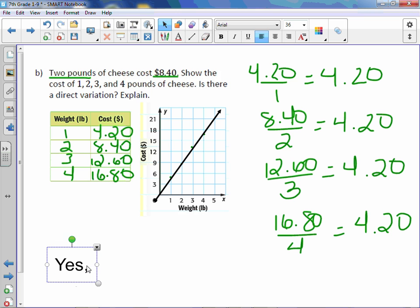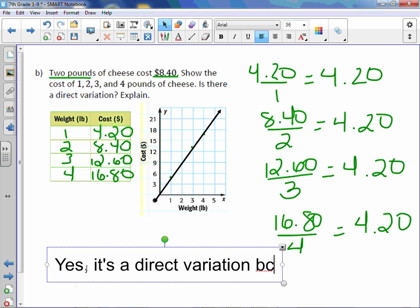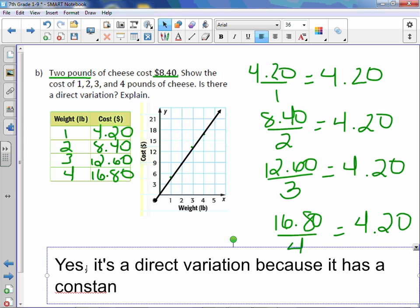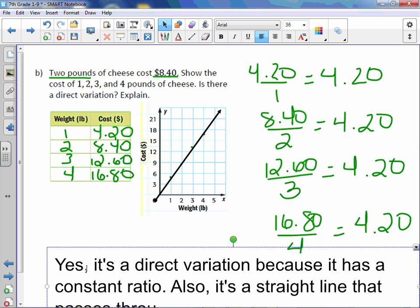So we can say yes, it's a direct variation because it has a constant ratio. Also, it's a straight line that passes through the origin.